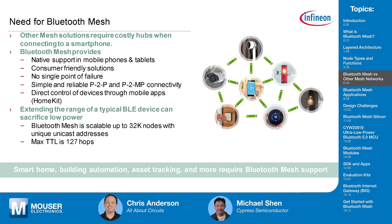Bluetooth mesh is natively supported on all mobile phones and tablets — it's consumer-friendly and already built in. In general, mesh has no single point of failure. With Zigbee, if you lose your hub you lose connectivity, but with Bluetooth mesh if you can't connect to node A you can connect to node B directly from your mobile device. Additionally, Zigbee has a node count limitation, whereas Bluetooth mesh supports up to 32,000 nodes because the maximum TTL (time to live) is 127 hops.